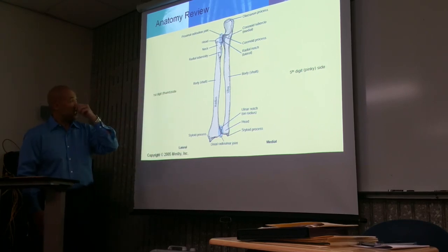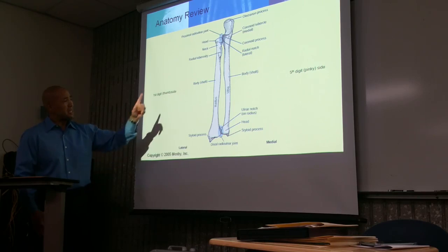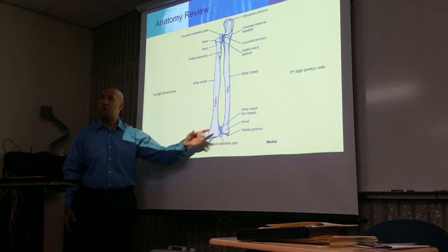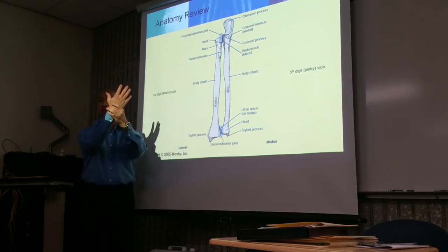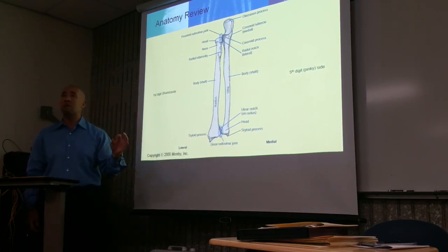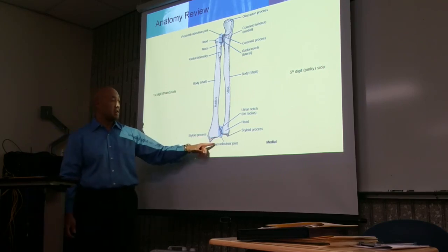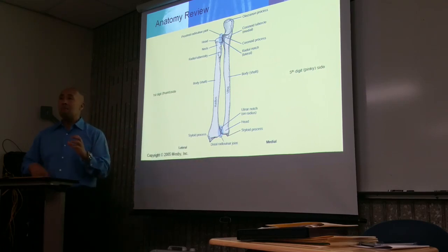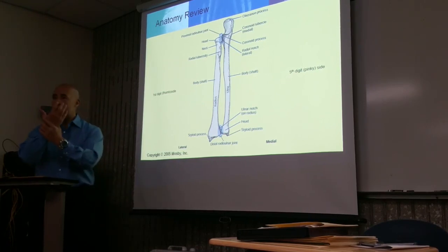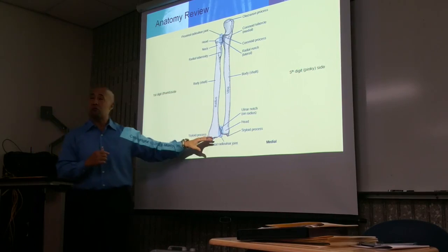The longest part of the bone is the shaft or body, and at the very end you have the styloid process. This is where we have the wrist joint. Here, with the radius and the carpals, you have the radial carpal joint. When we're talking about the wrist joint, the only bone that articulates with the carpals is the radius.